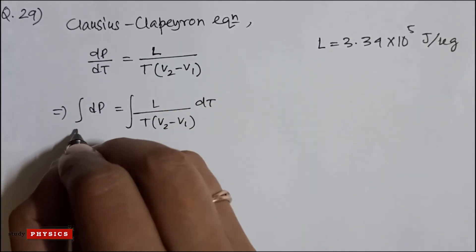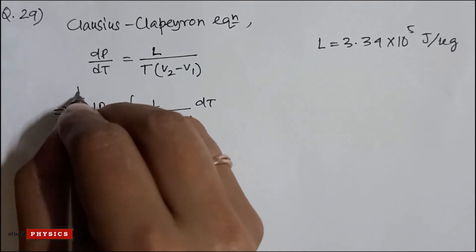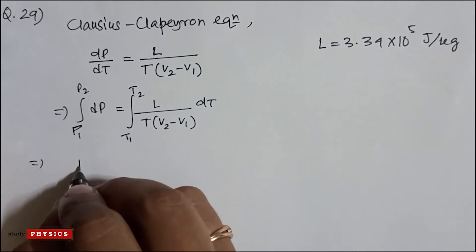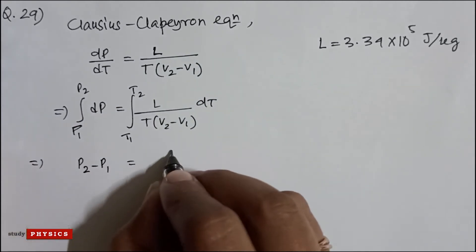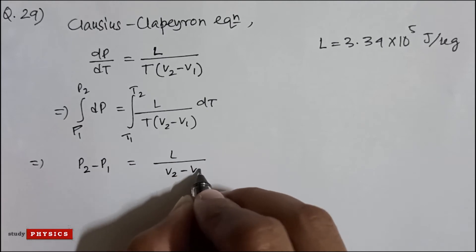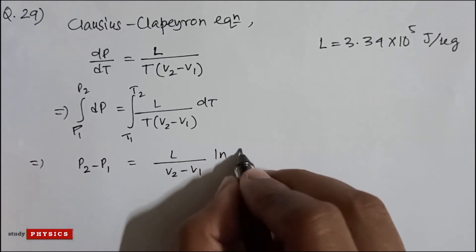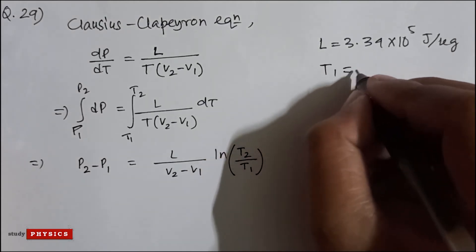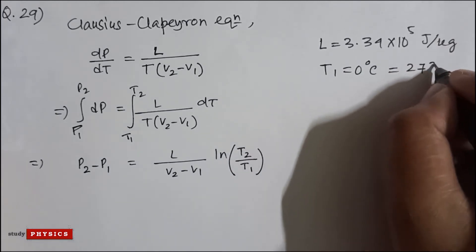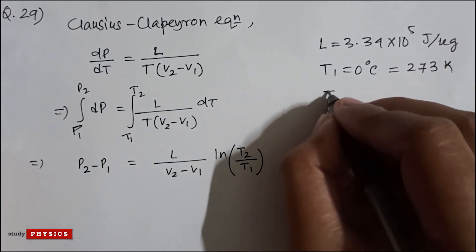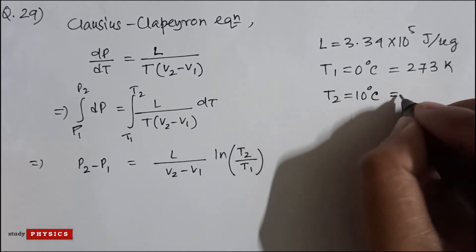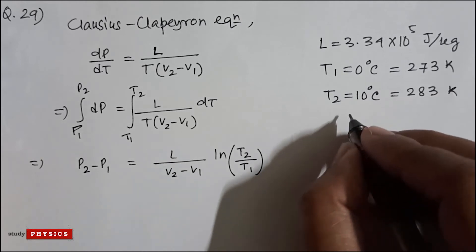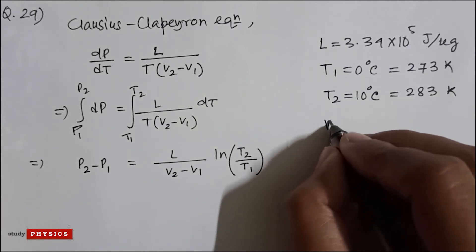Integrating from P1 to P2 and from T1 to T2, we get P2 minus P1 equals L divided by (V2 minus V1) into ln(T2 divided by T1). Here T1 is 0 degree centigrade which is 273 Kelvin, and T2 is 10 degree centigrade which is 283 Kelvin.